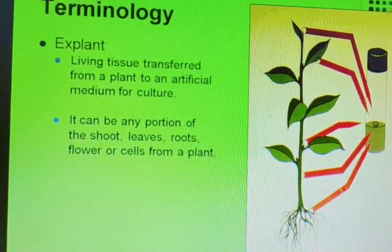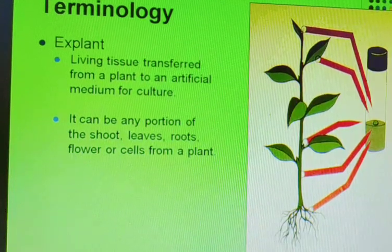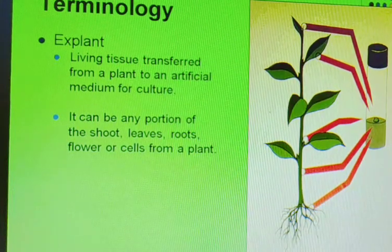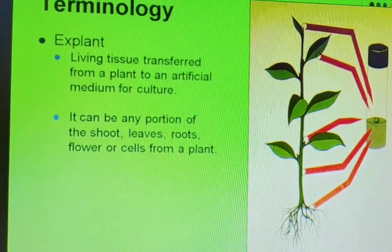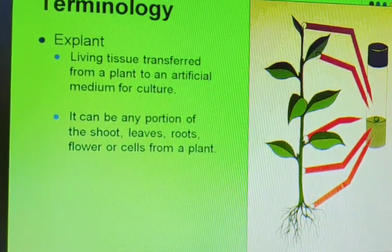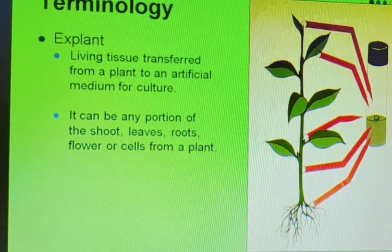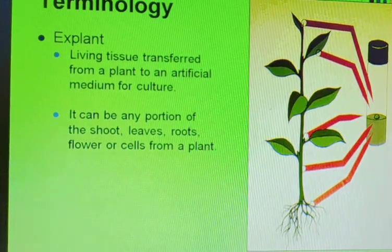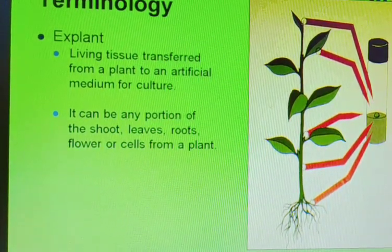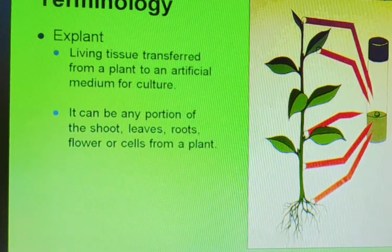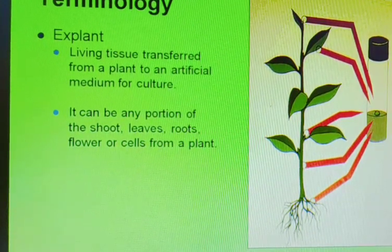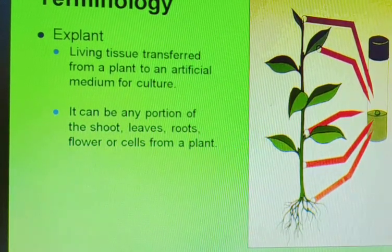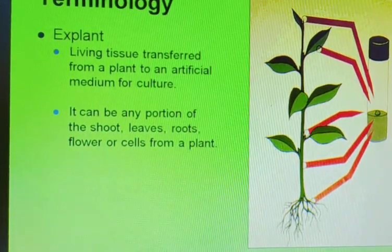The next term is explant. An explant is the living tissue transferred from a plant into an artificial medium for callus culture. A small part of the plant is transferred into the artificial medium. It can be any portion — shoot, leaf, root, flower, or a cell from the plant. Any living part of the plant is known as the explant.